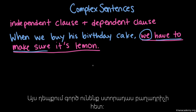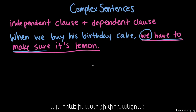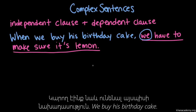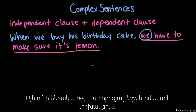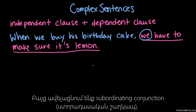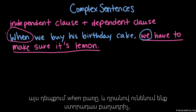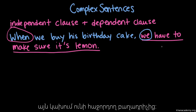In this case we have this other clause — what's called a dependent clause. We can't just say 'when we buy his birthday cake' as a sentence; that doesn't really stand on its own. It doesn't convey the information that a sentence needs to convey. We could have an independent clause that's just 'we buy his birthday cake' — it has a subject, 'we,' and a verb, 'buy,' and it expresses a complete idea. But we add this thing called a subordinating conjunction — the word 'when' — and that makes this into a dependent clause. It can't be a sentence by itself, so it depends on the later clause, 'we have to make sure it's lemon,' to be part of a sentence.